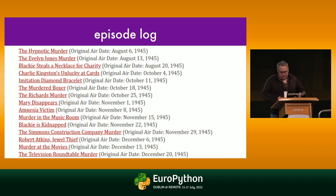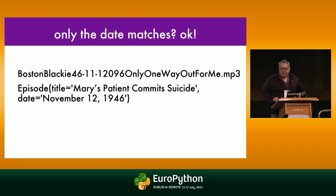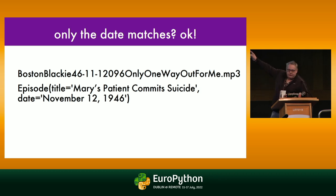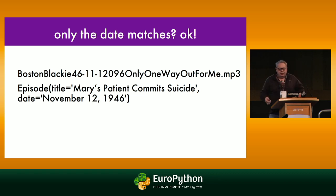Correlate is just the tool to do that. I gave a lightning talk about this at PyCon this year and knocked together a quick test case with some nice examples. Here's an example of matching up an MP3 file to an episode. I created my own episode object off of the episode log, and the only thing these two have in common is the date. But Correlate said this looks like a good match, and it's right.